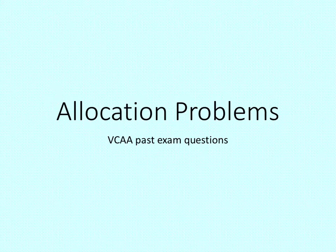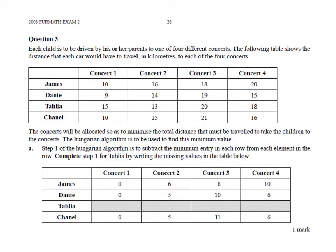In this video we're going to have a quick look at some allocation problems from some past VCE exams. Looking at this one from the 2008 Exam 2, each child is to be driven by his or her parents to one of four different concerts. The following table shows the distance that each car would have to travel in kilometers to each of the four concerts.